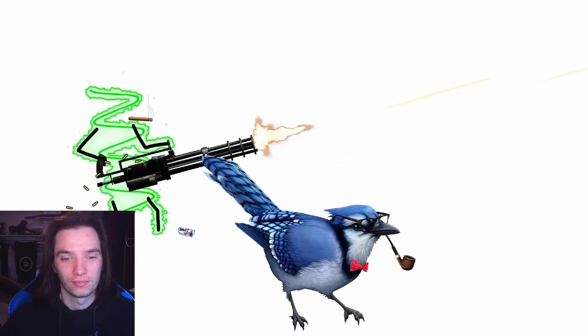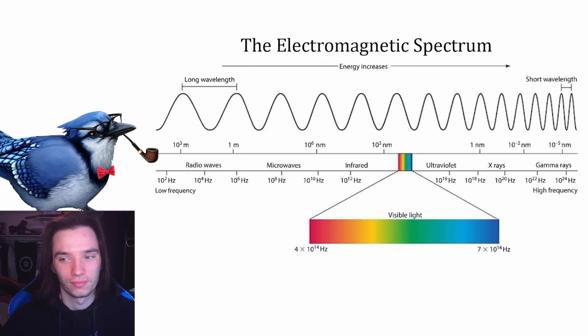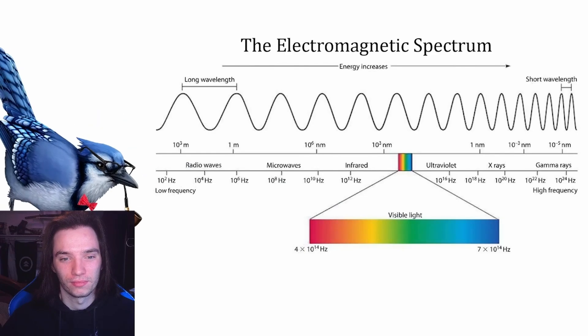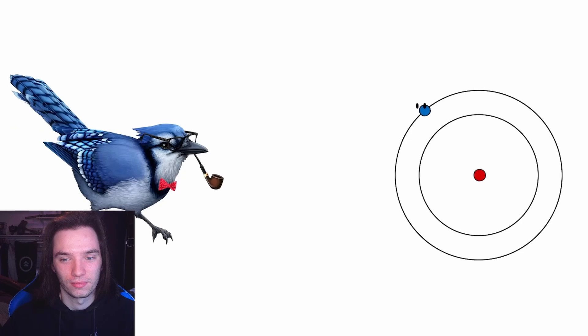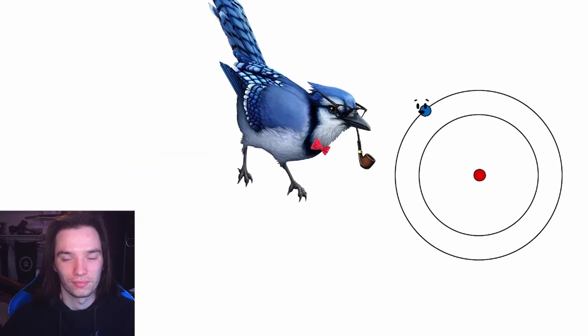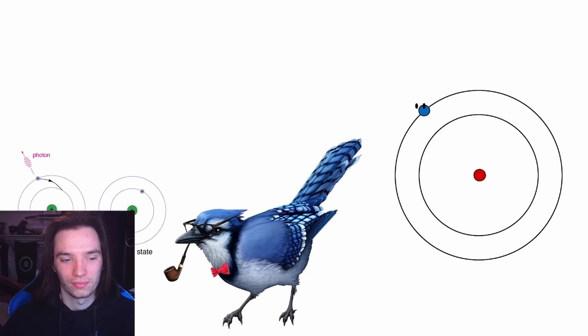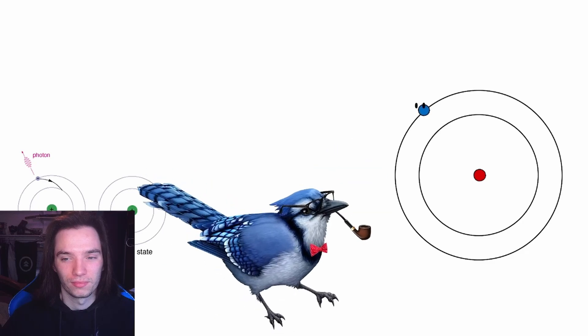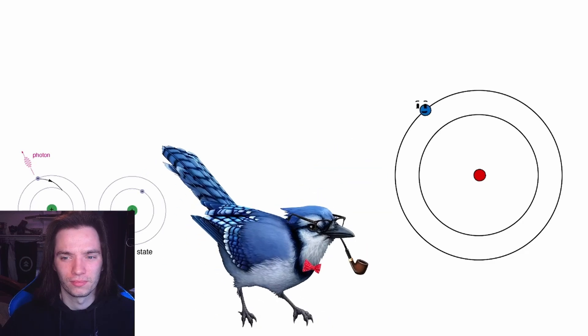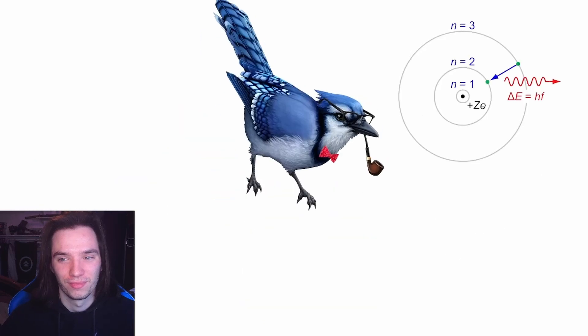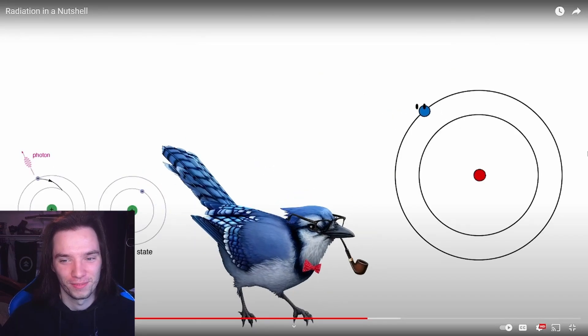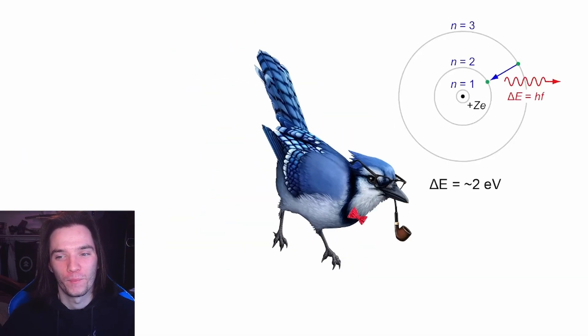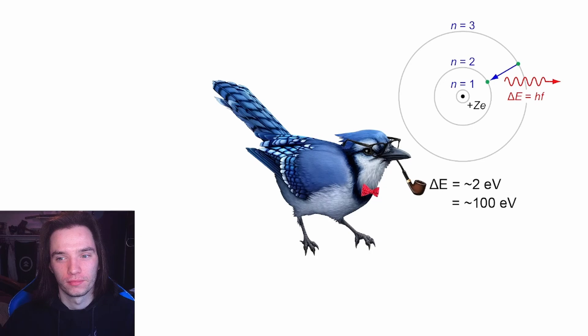Gamma rays are the most energetic form of light, and it's not even close. All of the previously discussed forms of electromagnetic radiation can be produced from an electron in an excited state, like this little rascal here, oh boy I'm excited, relaxing to its ground state by releasing a photon, aka light or electromagnetic radiation. The energies released in this process are typically around a few electron volts to a hundred, or many thousands in the case of x-rays.